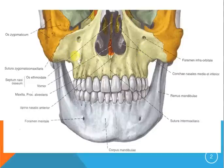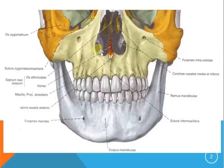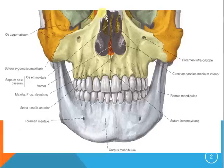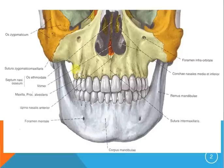Maxilla houses the upper teeth. It's the roof of the oral cavity, the floor of the nasal cavity, and also makes part of the floor of the orbita. It has four processes: the alveolar process, the frontal process, the zygomatic process which joins here in the sutura zygomatico-maxillaris with the zygomatic bone or os zygomaticum, and also the fourth process — the palatine process that joins with os palatinum on the backside.